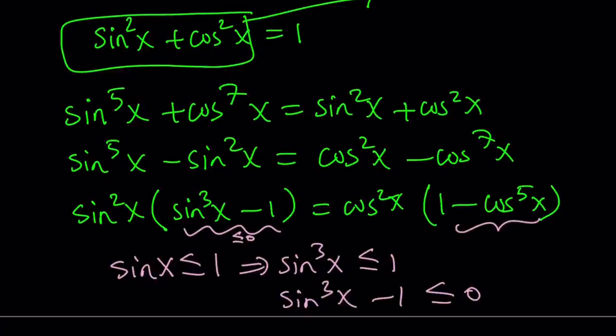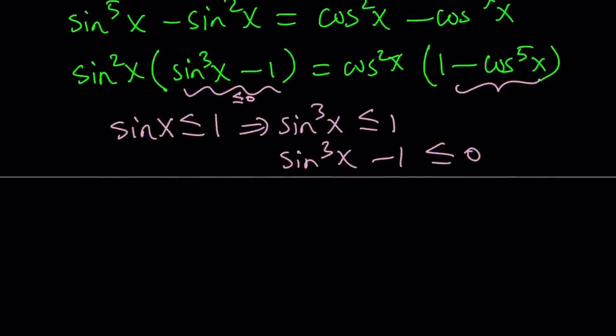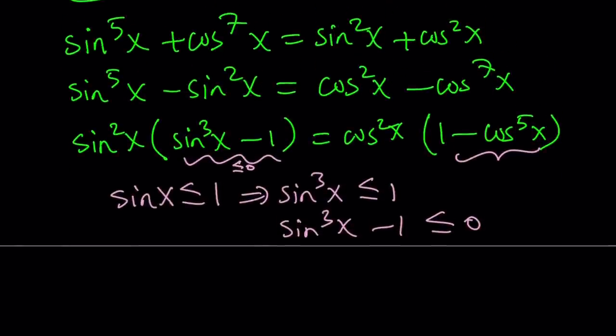Let's take a look at the other one. One minus cosine to the fifth. Notice that the reason why we look at something like this is, after factoring, the expressions inside the parentheses have an opposite pattern. One of them is sine minus one, the other one is one minus cosine. So they're kind of switched around.